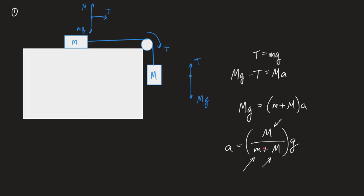There are things that aren't obvious but you should be able to speak to: as the mass on the table gets really small, it approaches zero, so the system accelerates close to g — nothing on the table has inertia, so the hanging mass just falls. But this system never has zero acceleration regardless of how big the mass in the denominator gets, because the fraction never equals zero. Those are the limits — that's how the questions will be asked.